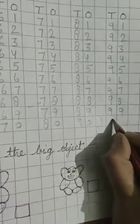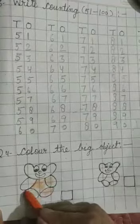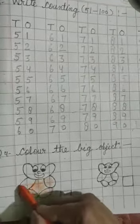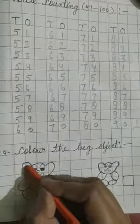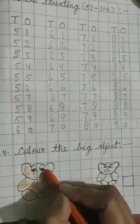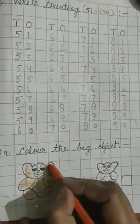Okay, students. Next is color the big object. And work should be neat and clean. Color should not be out. Okay, thank you.